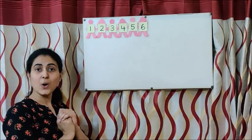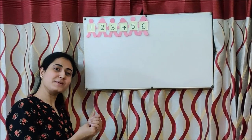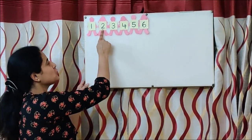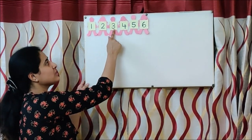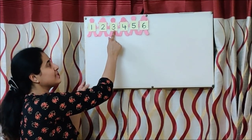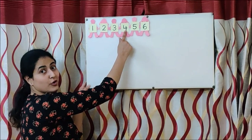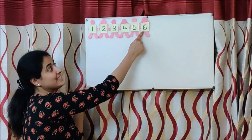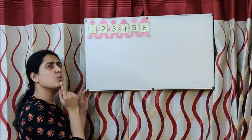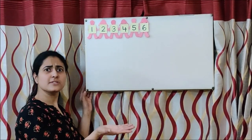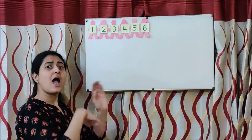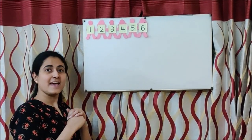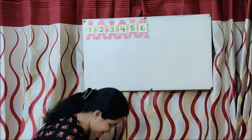Now let us say the poem again: One little, two little, three little Indians. Four little, five little, six little Indians. What comes after six children? Seven.